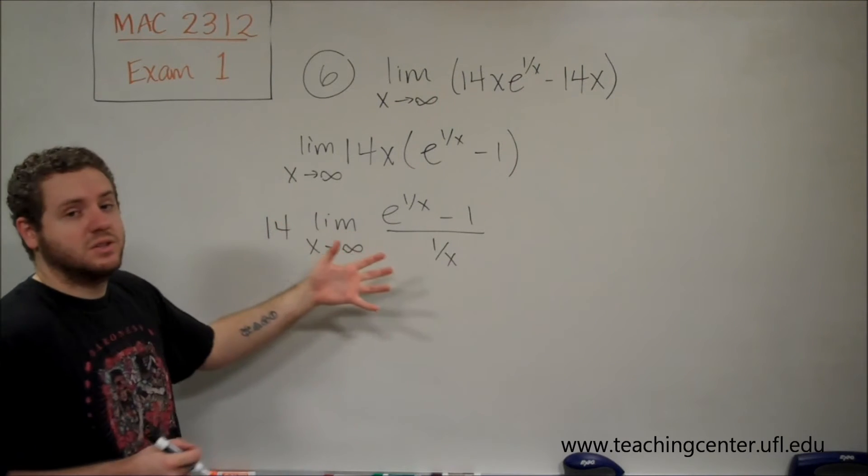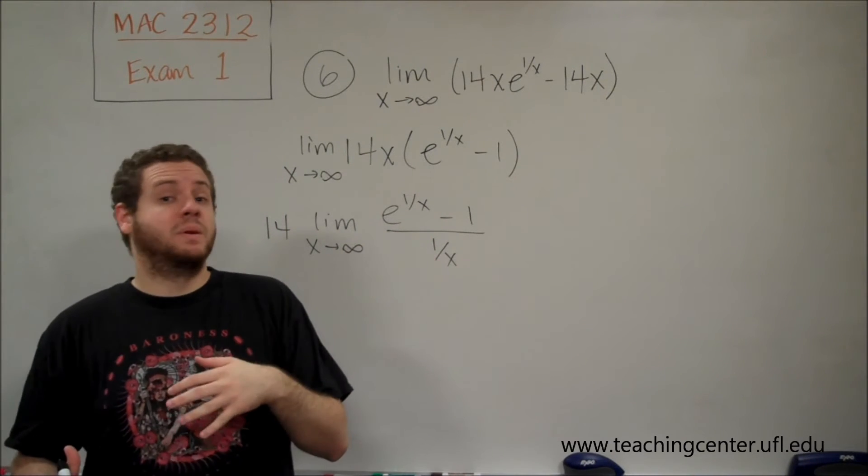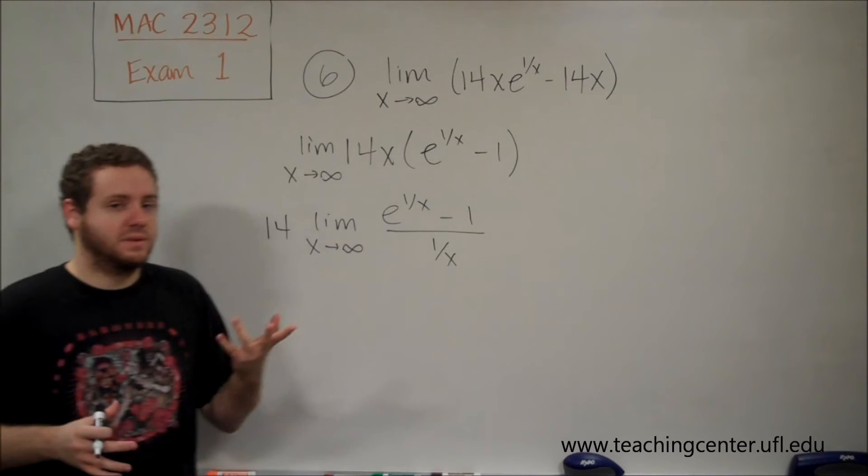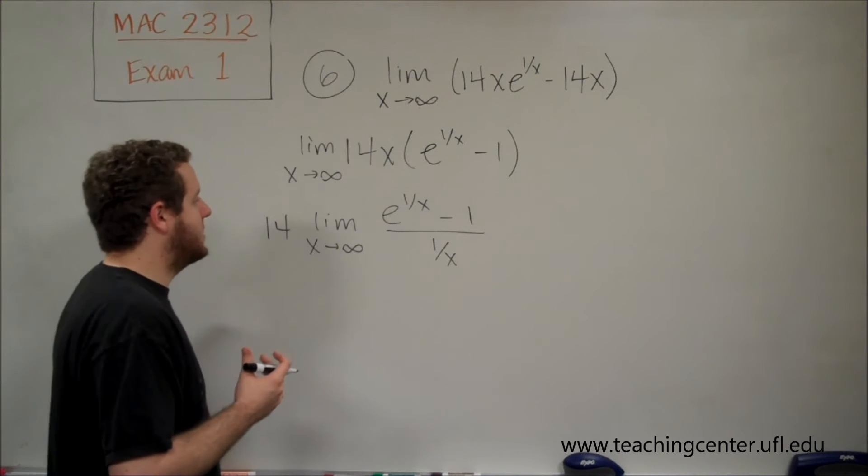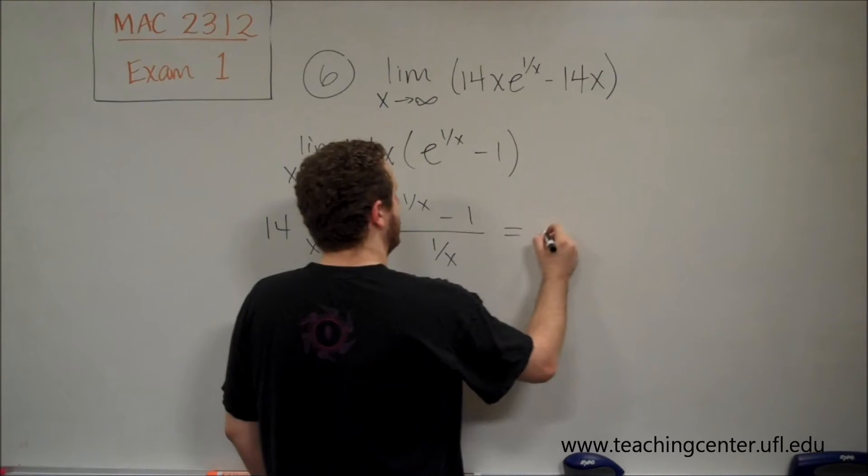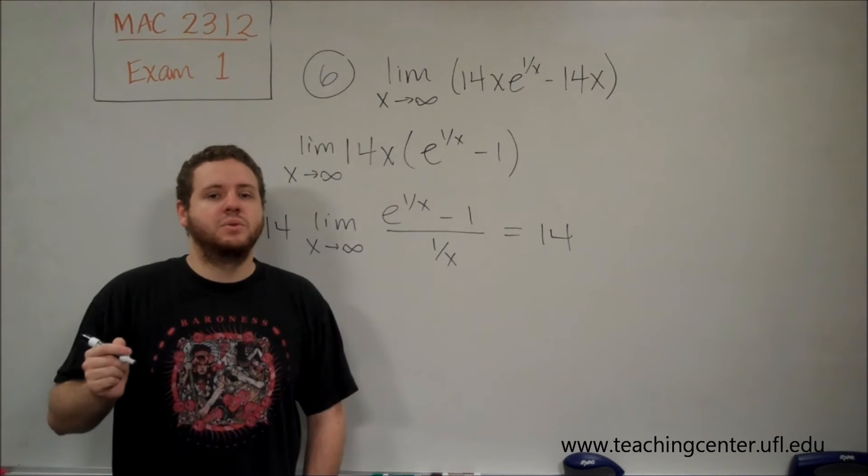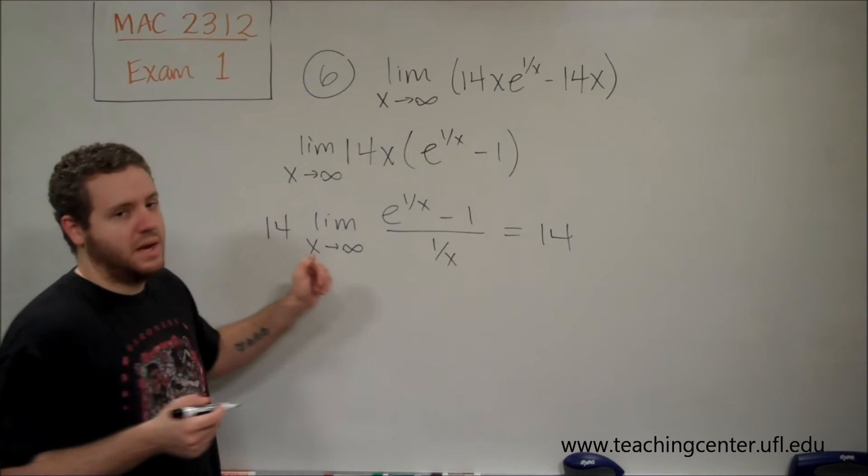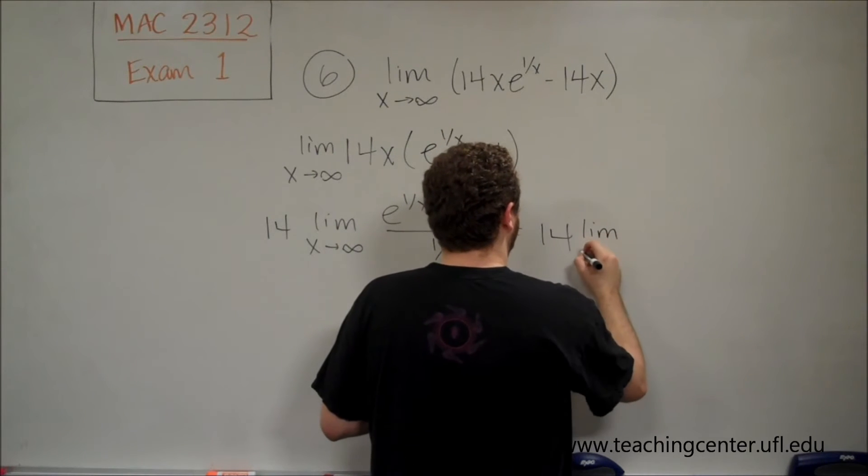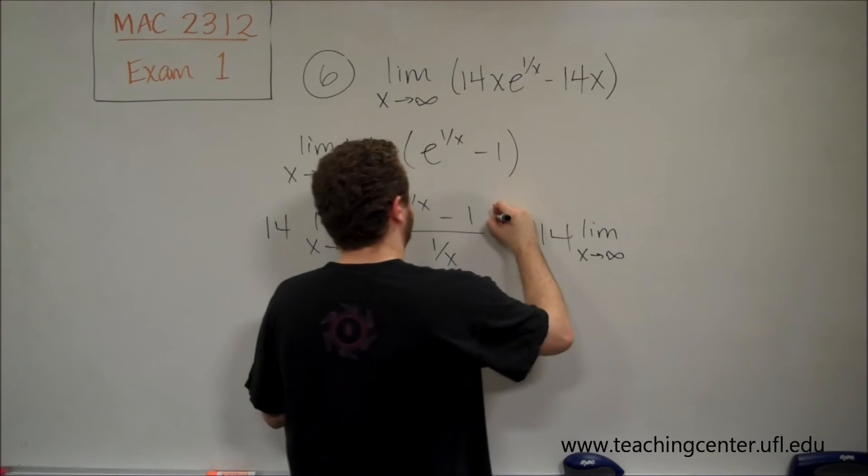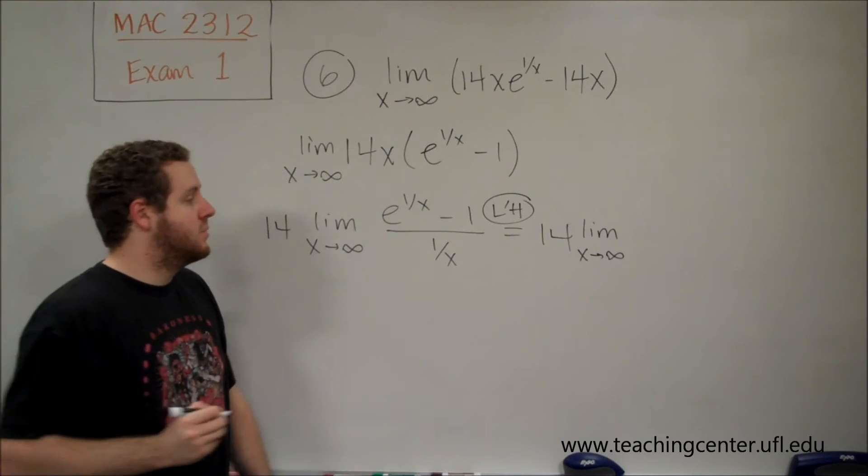Since this is still indeterminate, remember that no algebraic rearranging can make an indeterminate limit determinate just by moving things around. Now we're ready to use L'Hôpital's rule. L'Hôpital's rule says that if you have an indeterminate limit, the limit's value is the same as the limit of the derivative of the top over the derivative of the bottom. By L'Hôpital's rule, this equals the limit of the derivatives of the top and bottom.